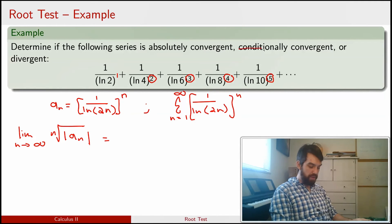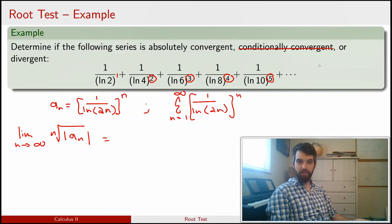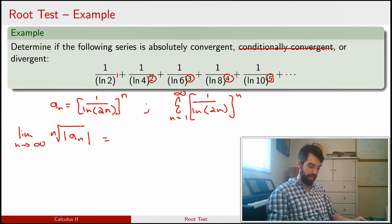In fact, we can almost immediately remove conditionally convergent as a possibility because since it's already all positive values, the absolute value doesn't change anything. If it converges, it for sure converges absolutely.